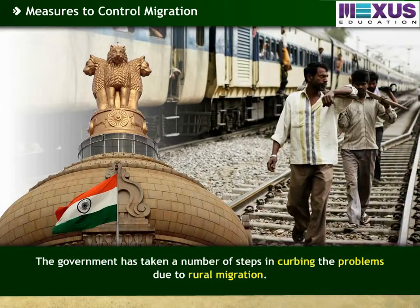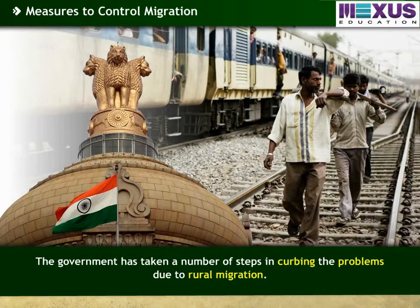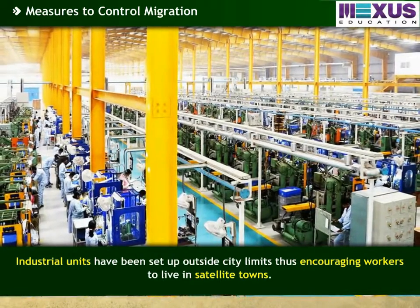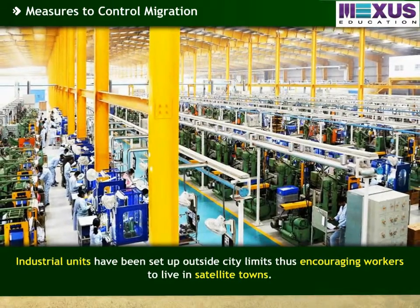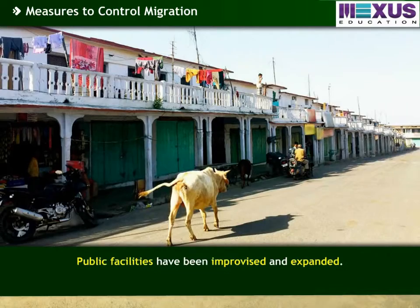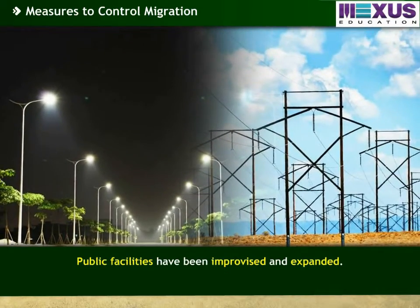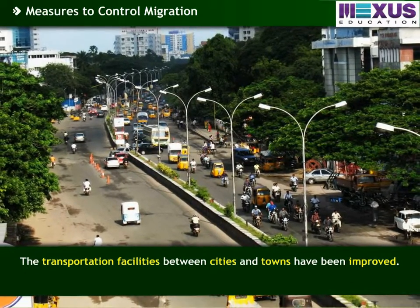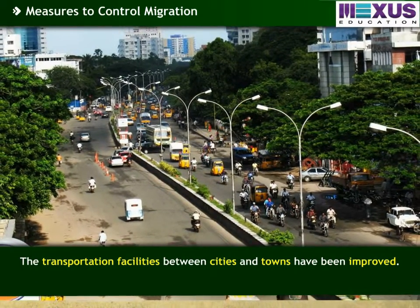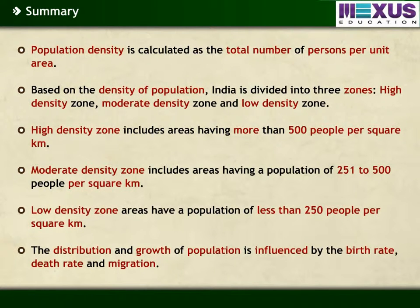The government has taken a number of steps in curbing the problems due to rural migration. Industrial units have been set up outside city limits, thus encouraging workers to live in satellite towns. Public facilities have been improvised and expanded, and transportation facilities between cities and towns have been improved. Let us now recap all the important points that we have covered in this module on population density and migration.